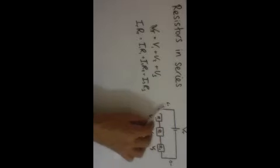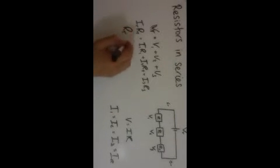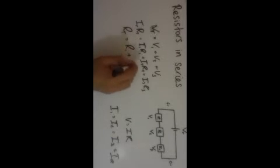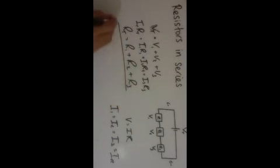But because we know that the current is the same everywhere, I1 equals I3 equals IR, it doesn't matter, the current is the same everywhere. We can divide through and get rid of all the I's, and so we just end up with RT equals R1 plus R2 plus R3. And this is the classic equation for resistors in series.